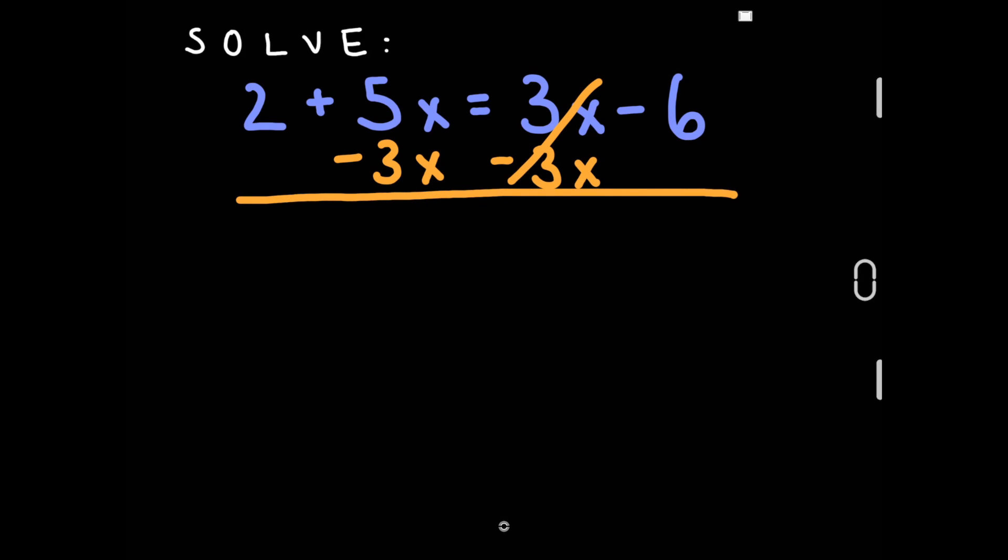So now our equation should look like 2 plus 2x equals negative 6. From here, it is a familiar 2-step equation. We want to isolate the variable by itself by subtracting 2 on both sides.